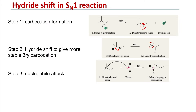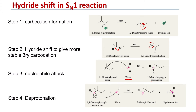The following step in the SN1 reaction will be the nucleophilic attack. The nucleophile, which could be water for example, will attack the tertiary carbocation. That will generate an intermediate, and finally, deprotonation from the water gives you the tertiary alcohol. So you end up with the tertiary alcohol rather than the secondary alcohol.